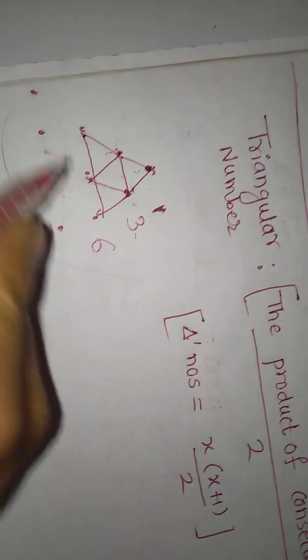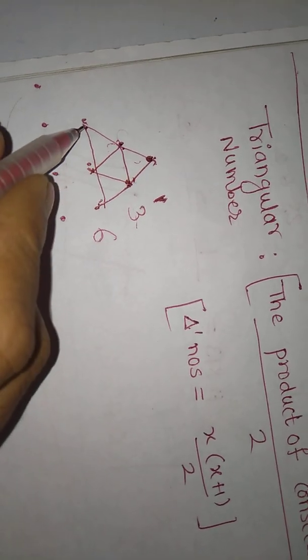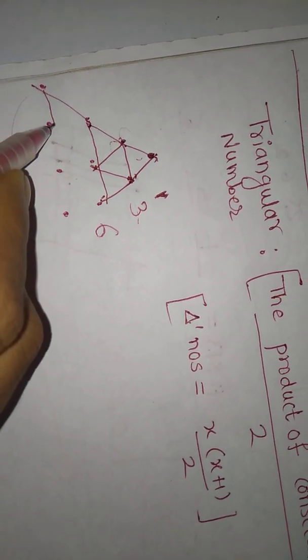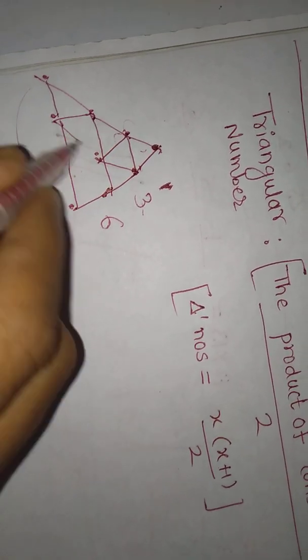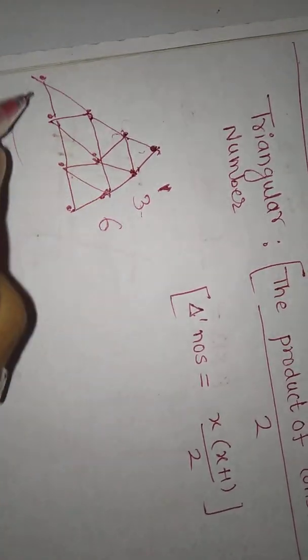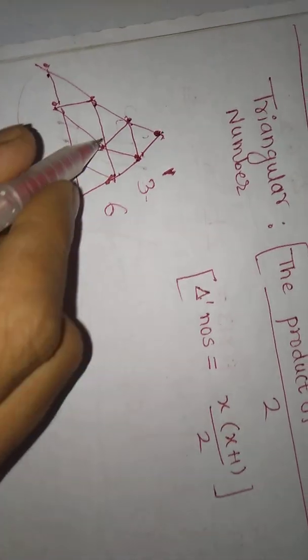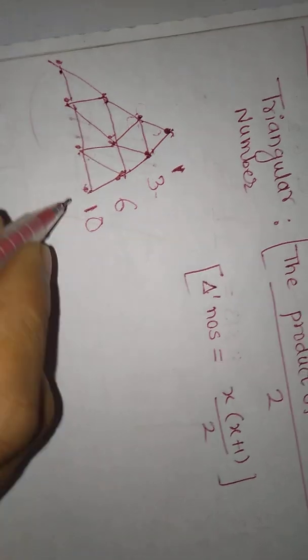The fourth triangular number is this, this, this. This means one, two, three, four, five, six, seven, eight, nine, ten. The fourth triangular number is this.